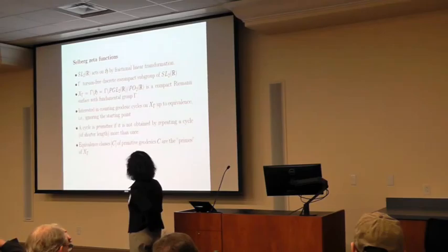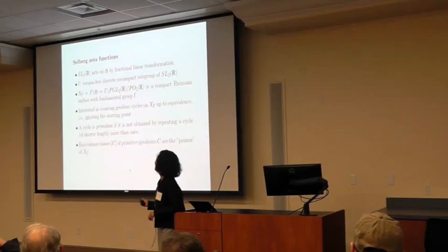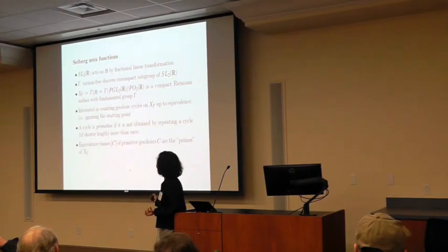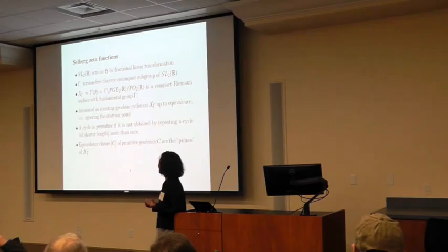There are several zeta functions I'll talk about. I'll start with the group SL₂(ℤ), which acts on the upper half-plane by fractional linear transformations. We can take a discrete torsion-free co-compact subgroup of SL₂(ℝ) and look at its orbit space. Because of the way we choose our group, this orbit space is a compact Riemann surface. Since the upper half-plane is simply connected and the group is torsion-free, it is the fundamental group of this quotient.